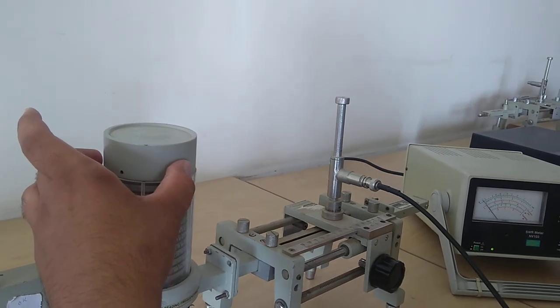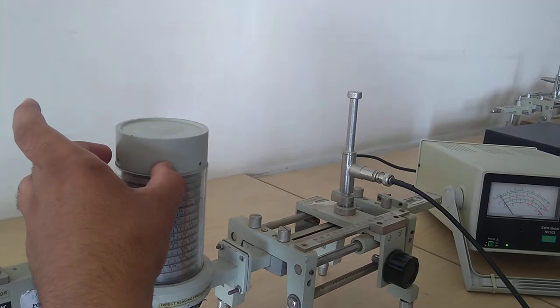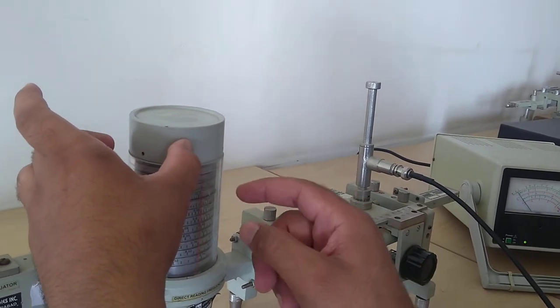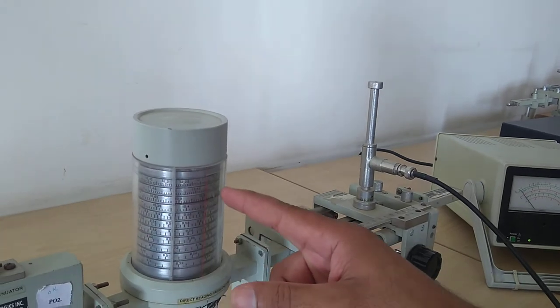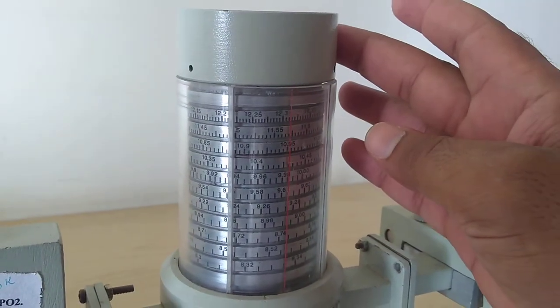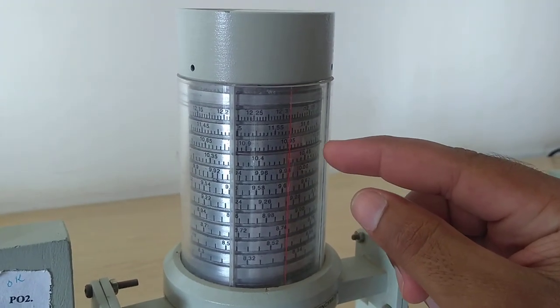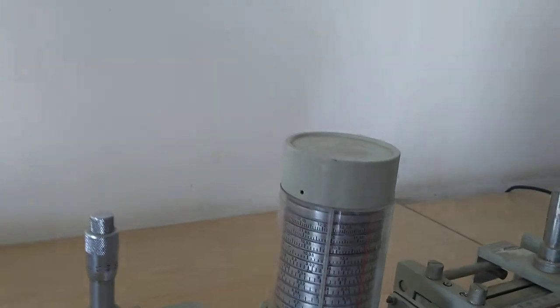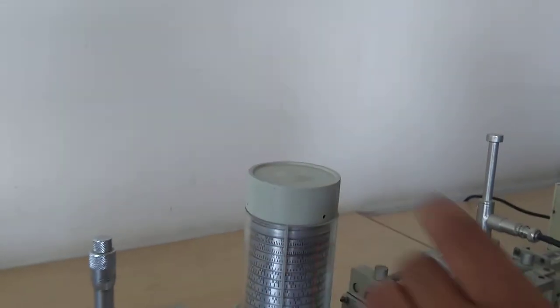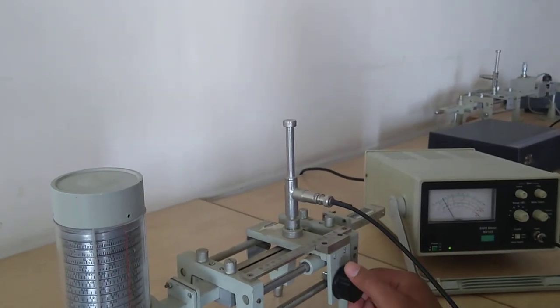At resonance frequency, we get maximum power at the output. The resonance frequency is at around 10.95 gigahertz. After noting down this frequency, I move the frequency meter and then go to the slotted section.